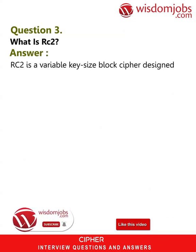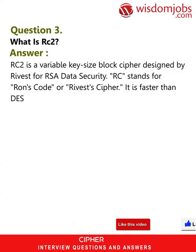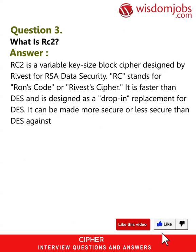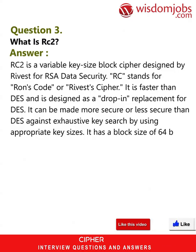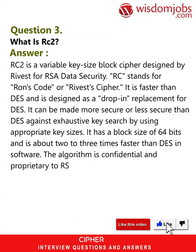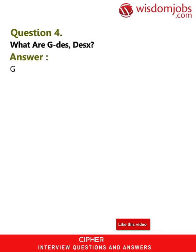Question 3: What is RC2? Answer: RC2 is a variable key size block cipher designed by Rivest for RSA Data Security. RC stands for Ron's Code or Rivest Cipher. It is faster than DES and is designed as a drop-in replacement for DES. It can be made more or less secure than DES against exhaustive key search by using appropriate key sizes. It has a block size of 64 bits and is about two to three times faster than DES in software. The algorithm is confidential and proprietary to RSA Data Security. RC2 can be used in the same modes as DES.